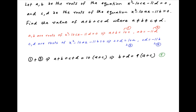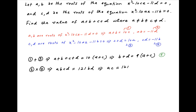Multiplying results 2 and 4, we get abcd equals 121 times bd, which implies that ac equals 121. Let's call this result 6.